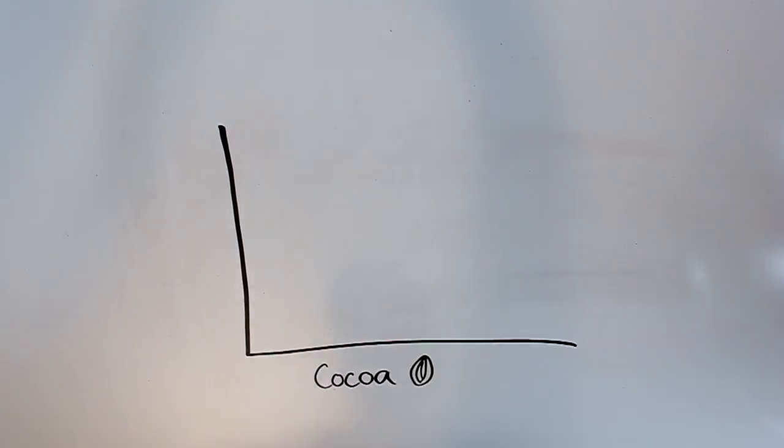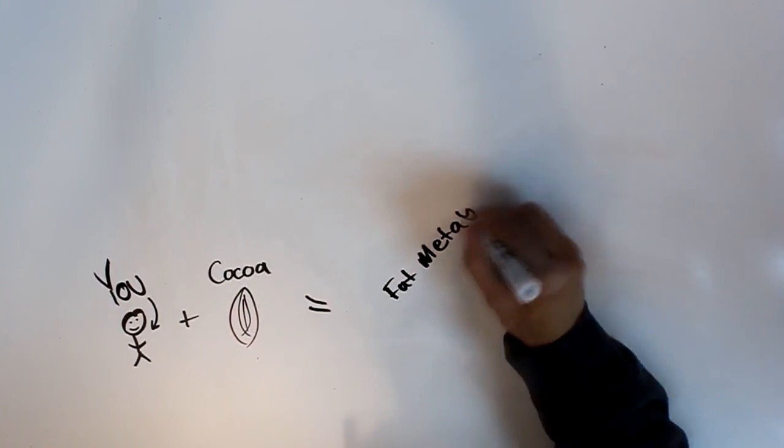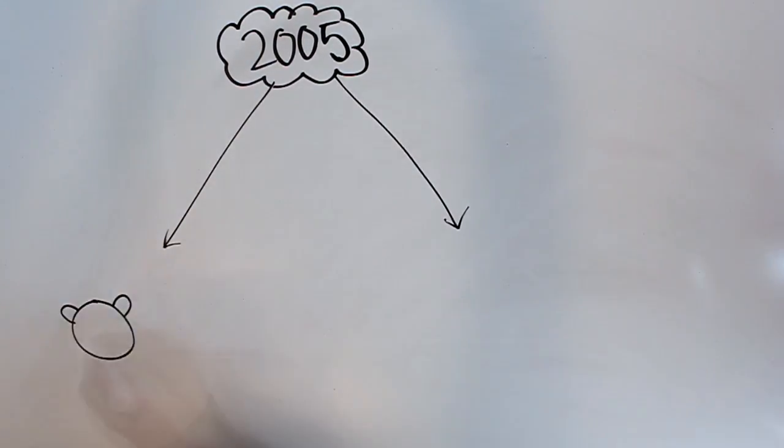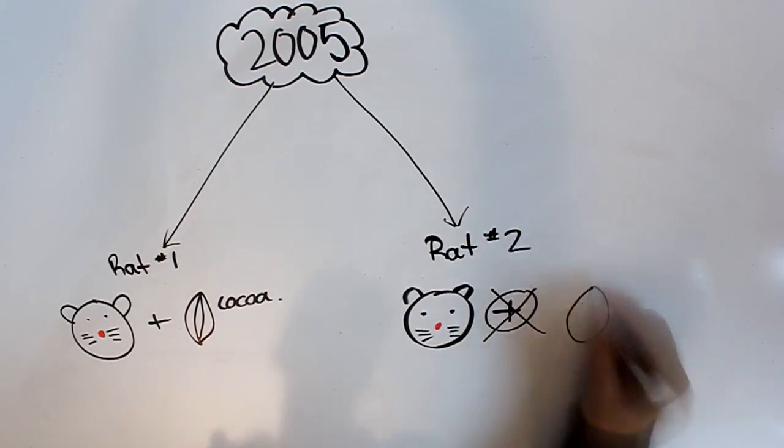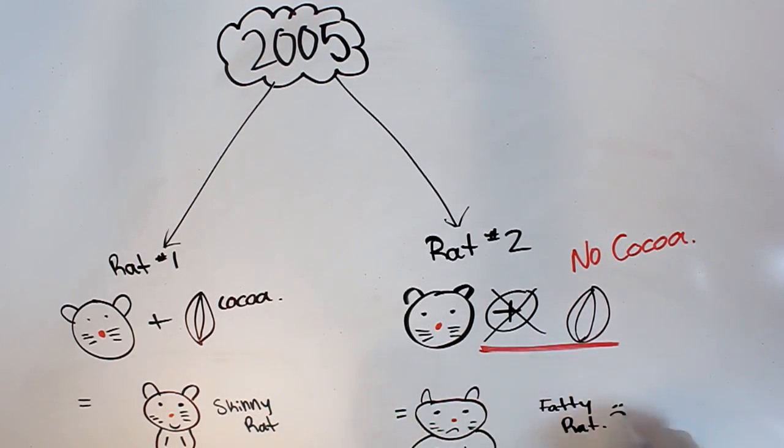Cocoa increases fat metabolism. Increasing one's intake of raw organic cocoa powder can improve their body's ability to metabolize fat and use it as energy. This was tested on rats in 2005. When rats were fed real cocoa, they exhibited significantly lower rates of fatty tissue compared to the rats that weren't fed cocoa.